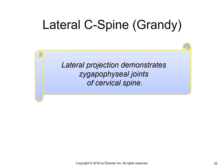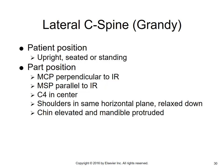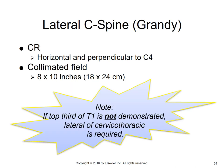The lateral, called the Grandy method, demonstrates the zygapophyseal joints of the cervical spine — unlike the lumbar and thoracic spine where the obliques demonstrate those joints. Patient position is upright, seated, or standing, because you need to bring the patient's arms and shoulders down. MSP is parallel to the IR, MCP is perpendicular to the IR. C4, the thyroid cartilage, is in the center of the radiograph. Shoulders are in the same horizontal plane and relaxed down. The chin is elevated and the jaw protruded. Central ray is horizontal and perpendicular to the level of C4 at mid-neck. Collimated field is 8 by 10 inches.